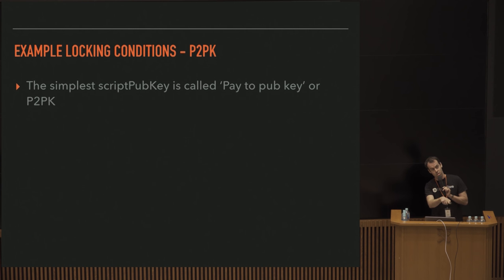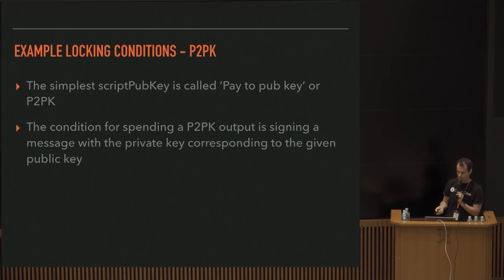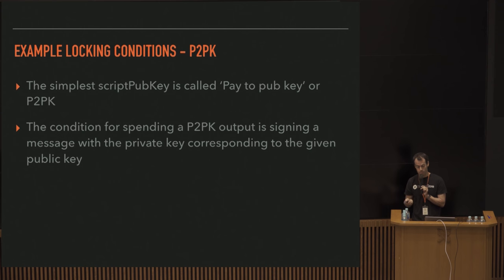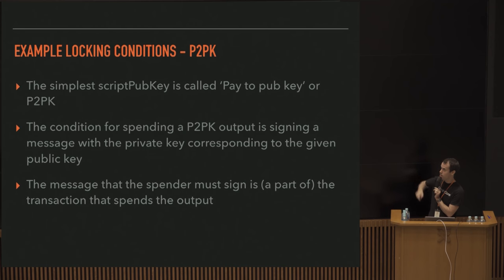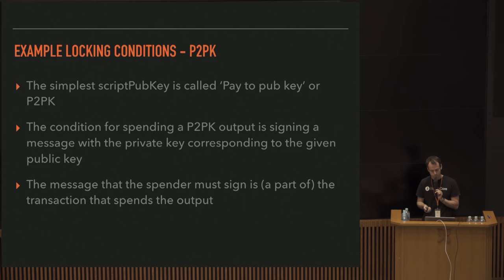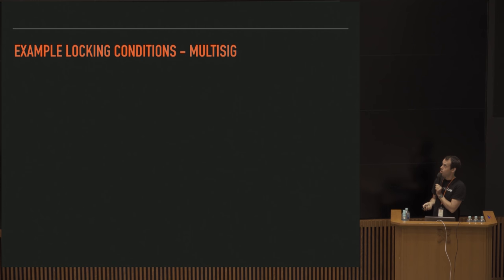The simplest ScriptPubKey is called pay-to-pubkey or P2PK. The condition for spending a P2PK output is signing a message with the private key corresponding to the given public key. The message the signer must sign is a part of the transaction they are signing - this is just a digital signature over the transaction or parts of it. It's called ScriptPubKey because the script contains a public key, and ScriptSig because the script contains a signature.